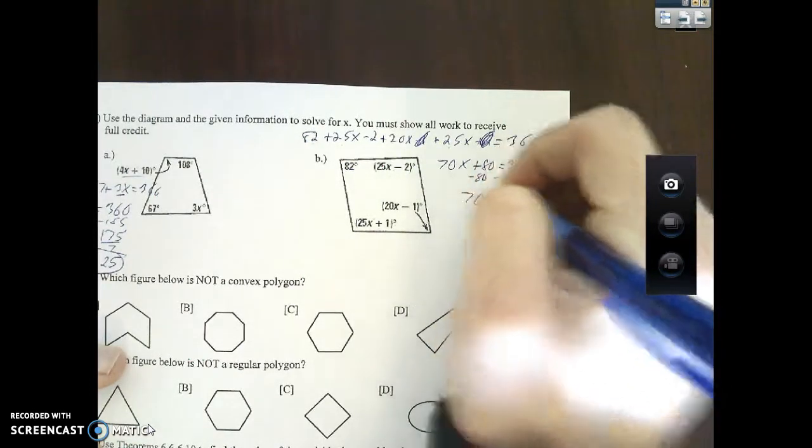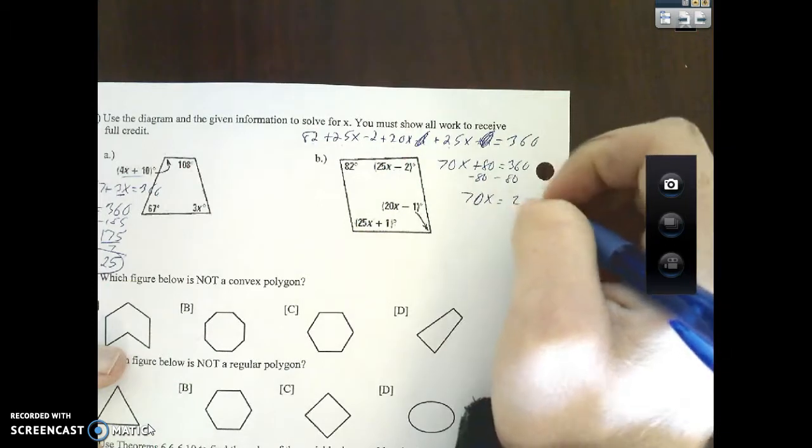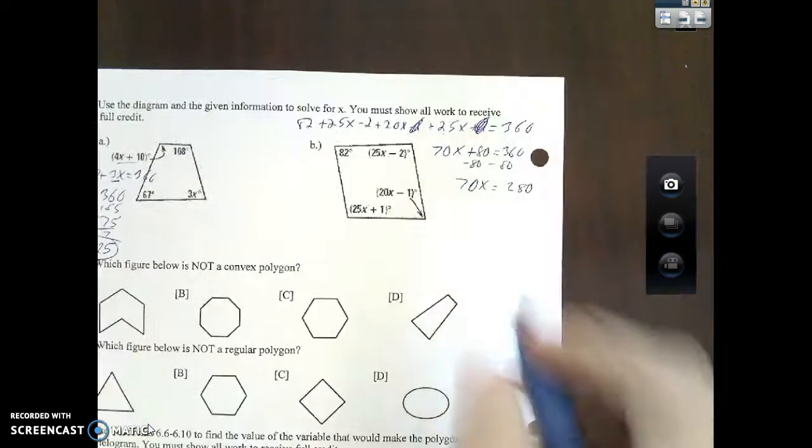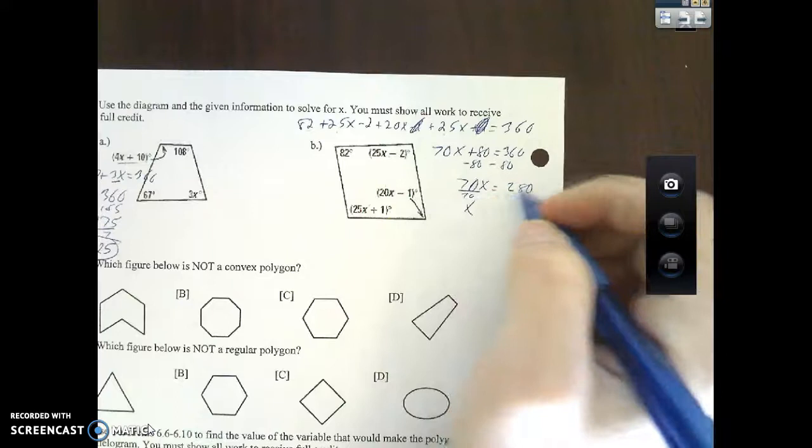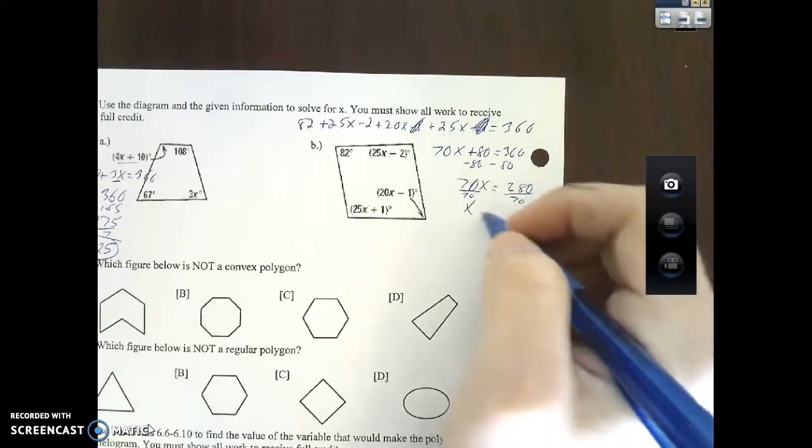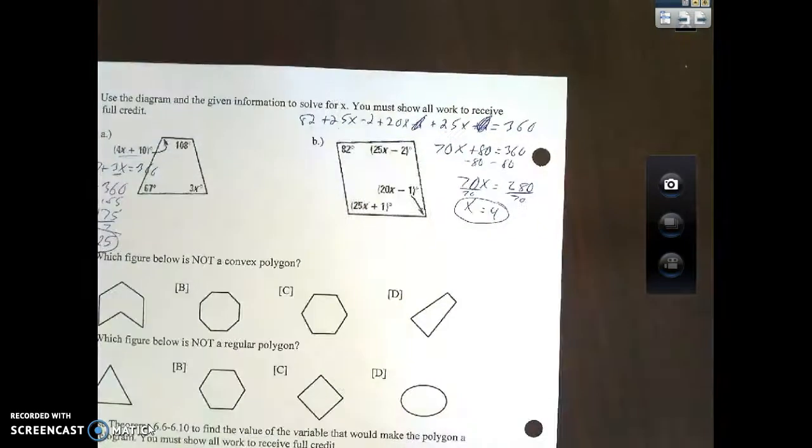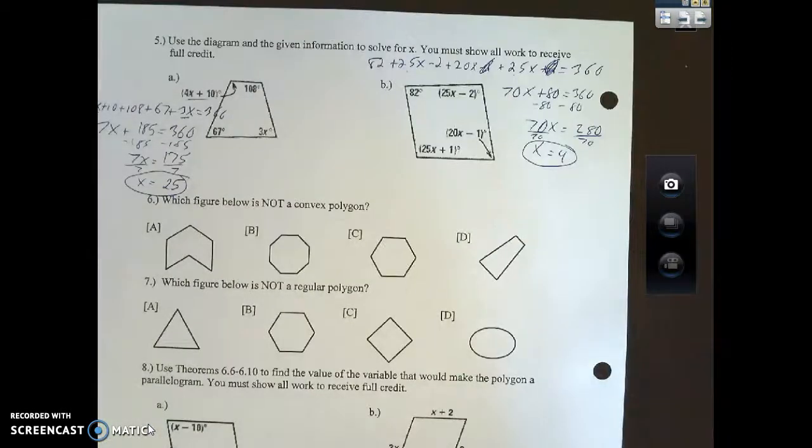70x equals 280, divide by 70, x equals 4. You can plug it back in if you would like to see if you were good.